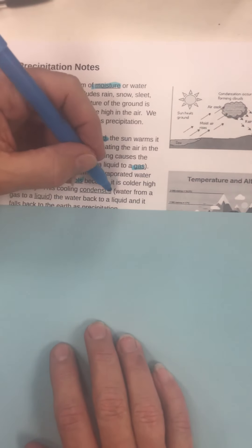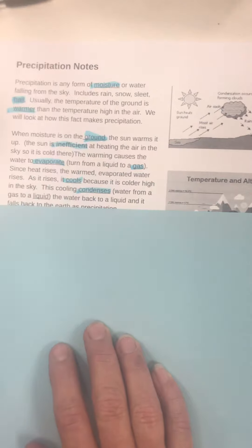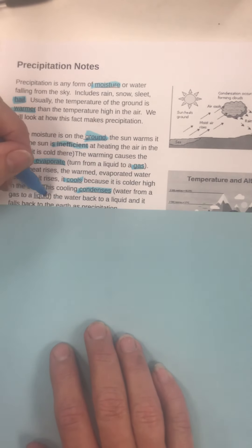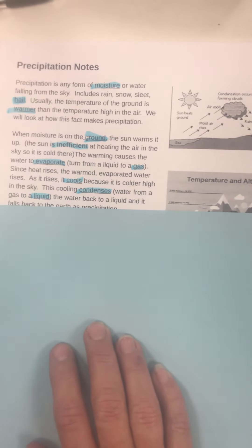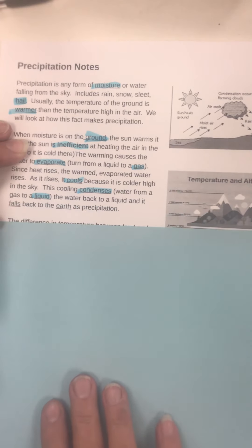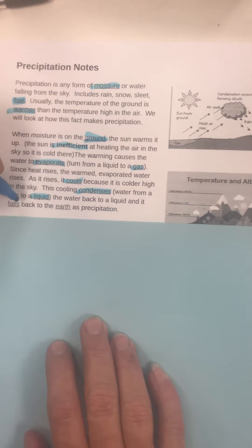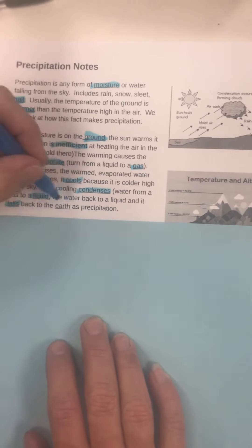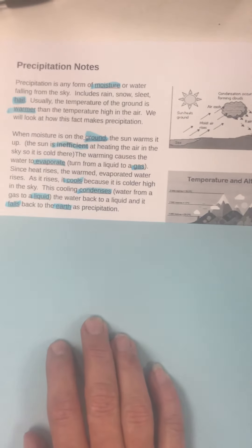This cooling condenses the water, turning it from a gas back into a liquid, and it falls back to the earth as precipitation.